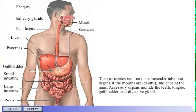The gastrointestinal tract is a muscular tube that begins at the mouth, or the oral cavity, and ends at the anus. Accessory organs include the teeth, tongue, gallbladder, and digestive glands.